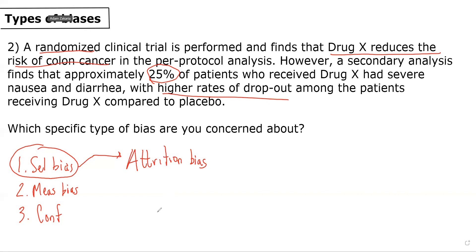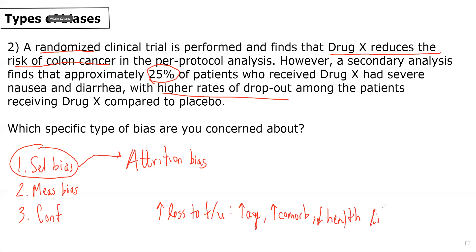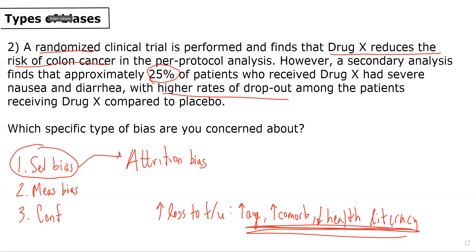For example, in this case where 25% of patients have severe nausea and diarrhea, patients who may be more likely to be lost to follow-up could include people who have less reserve to deal with these side effects — so maybe patients of older age, patients with increased comorbidities, or patients with lower health literacy. These populations, in the face of adverse events, may be more likely to drop out. And if we're losing these individuals from the drug X sample, now the drug X sample is younger, healthier, and has higher health literacy — and therefore is probably healthier overall than the study sample of people receiving placebo. We can imagine how that would induce a selection bias such that patients receiving drug X are now healthier and younger, and are probably more likely to have a better outcome regardless of whether they get drug X or placebo.